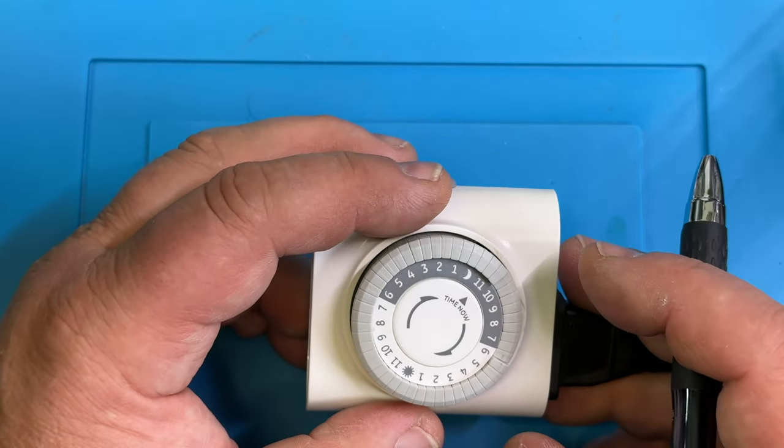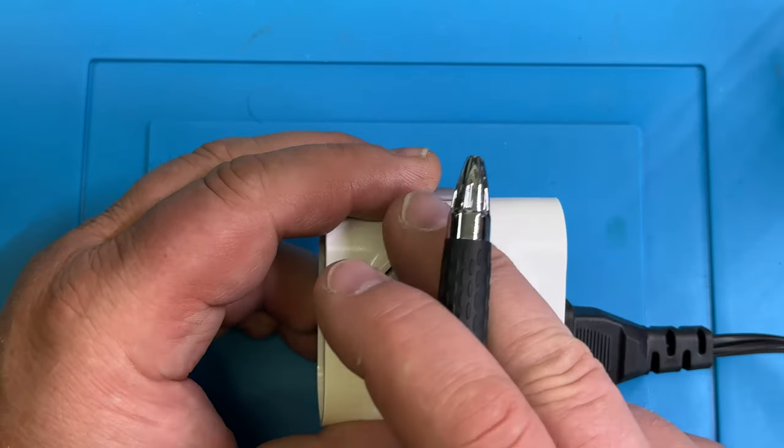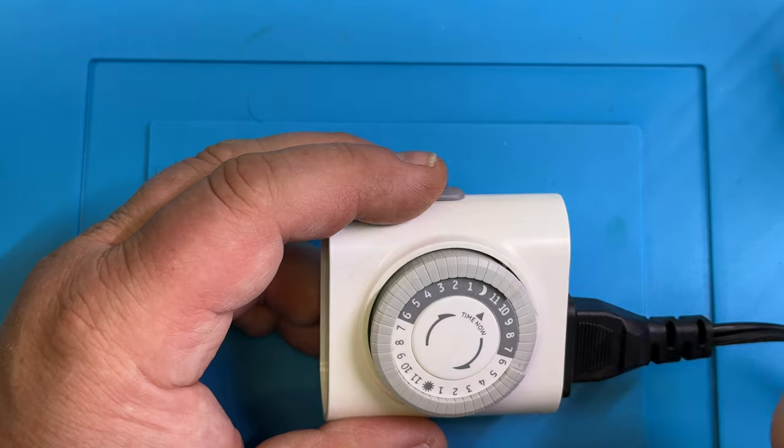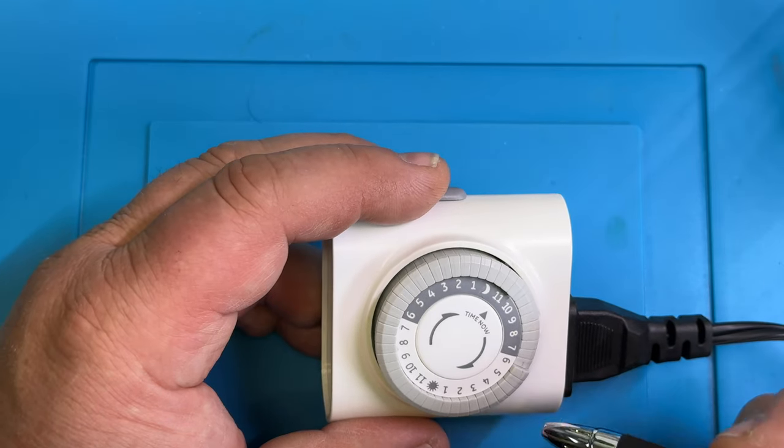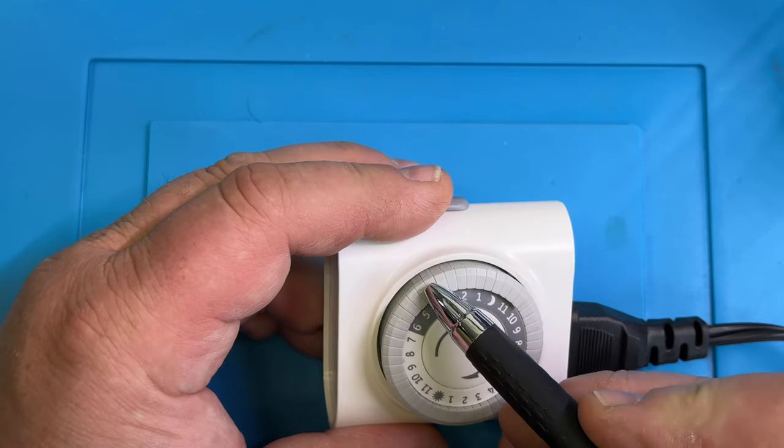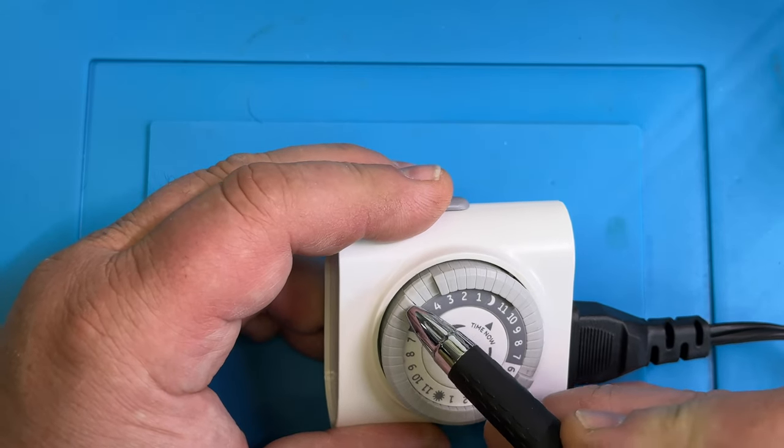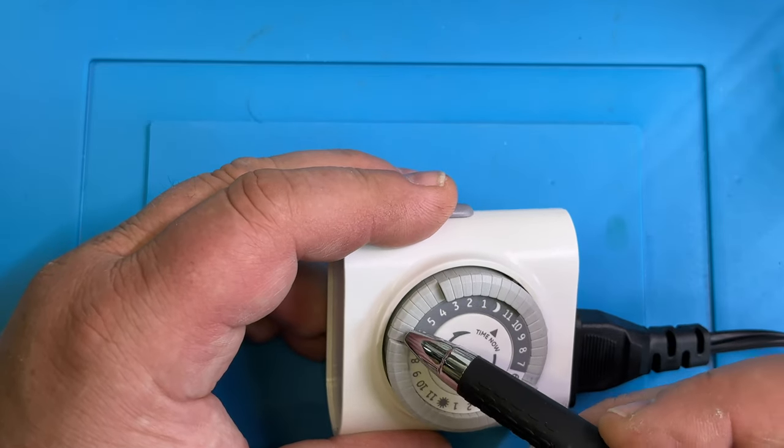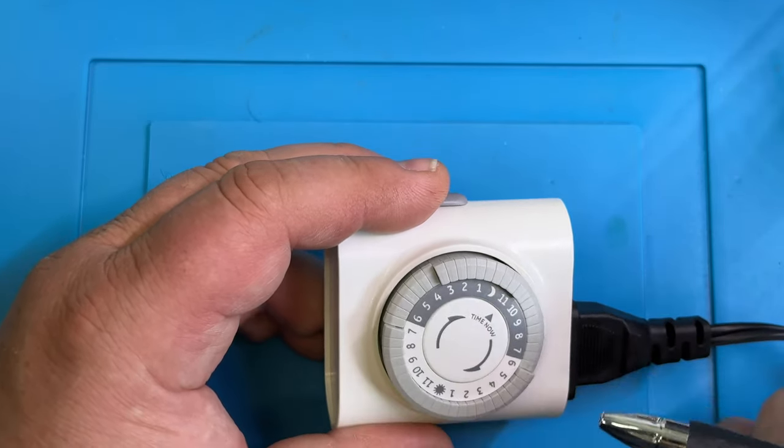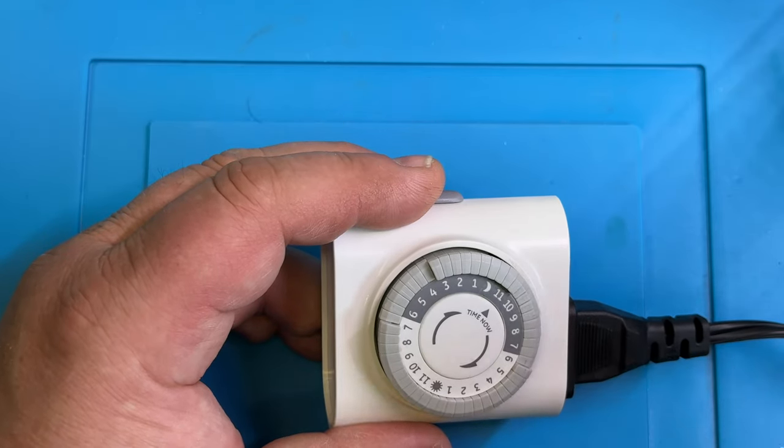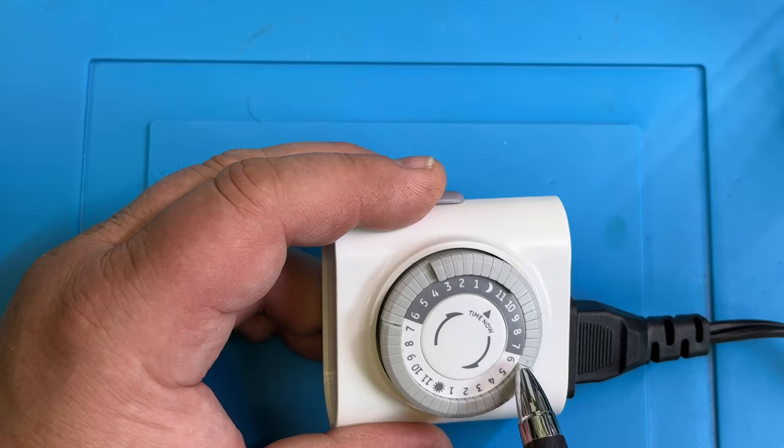And if you want to create additional time events over this 24-hour period, you can push down more of them. So let's say if you also want your lamp to be on from 4 am to 7 am, you would push those in. Now you see they are all pushed in. So in this time frame the light will be on, and in this time frame the light will be on. During the day it will be off.